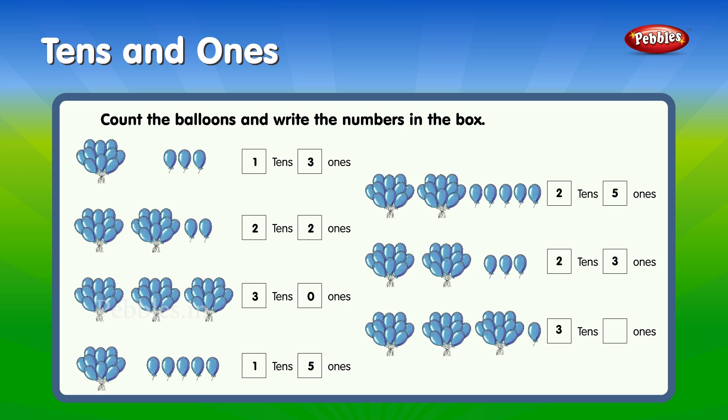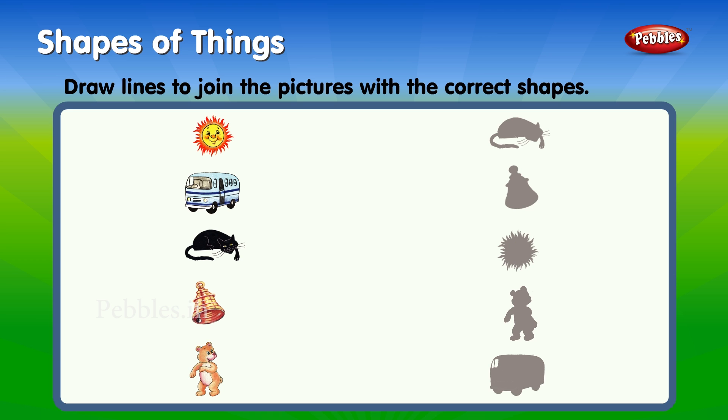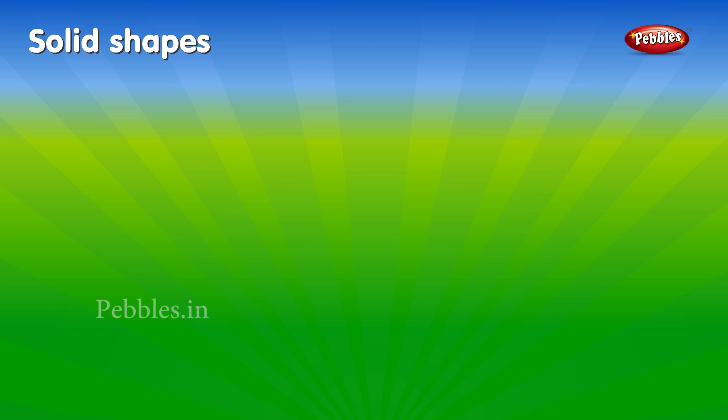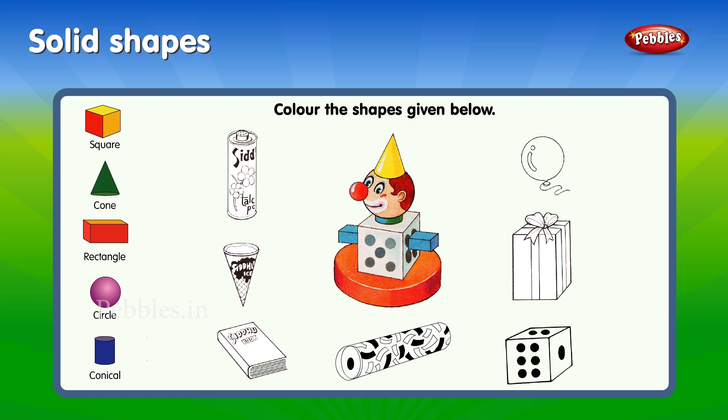Shapes of things. Draw lines to join the pictures with the correct shapes. Solid shapes: square, cone, rectangle, circle, conical. Color the shapes given below.